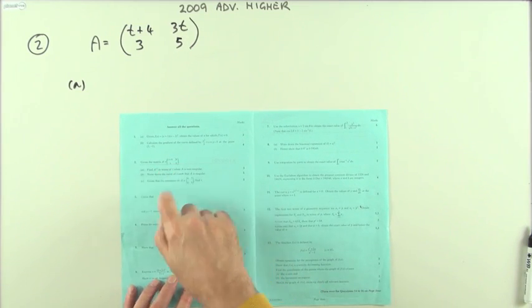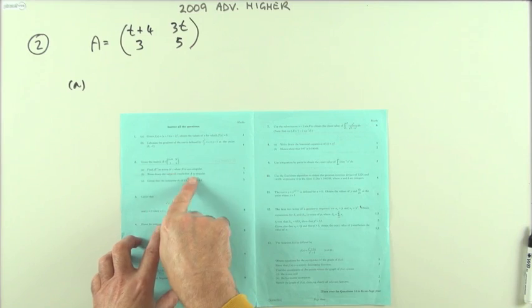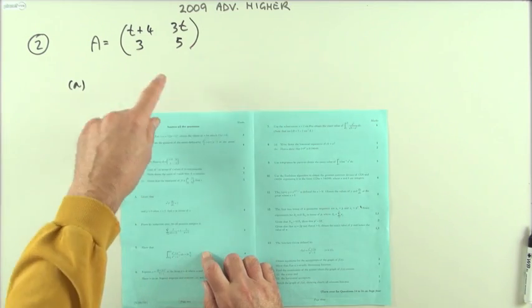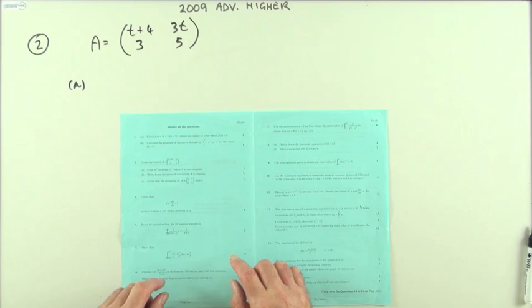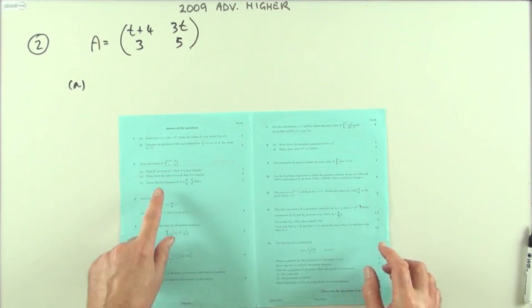Number two, a little matrix question. Just some nice simple little things: find the inverse of a two by two, find a value that makes it singular, and transpose it with an equation. Well, first of all, what's the inverse?